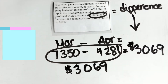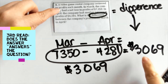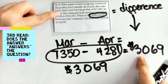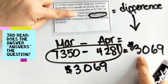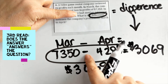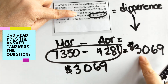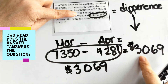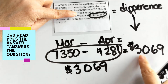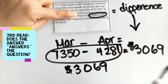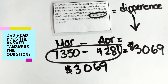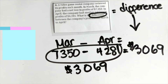For the last read, I ask: does this actually answer the question? Am I looking for the difference? Yes. When I look for the difference, I can see that April's number is less than March's, which gives me confidence that I'm on the right track.